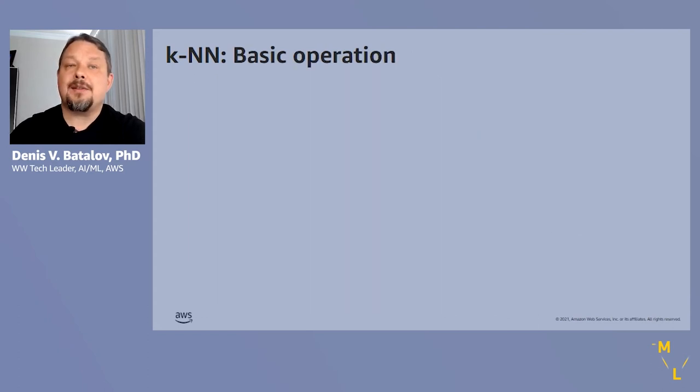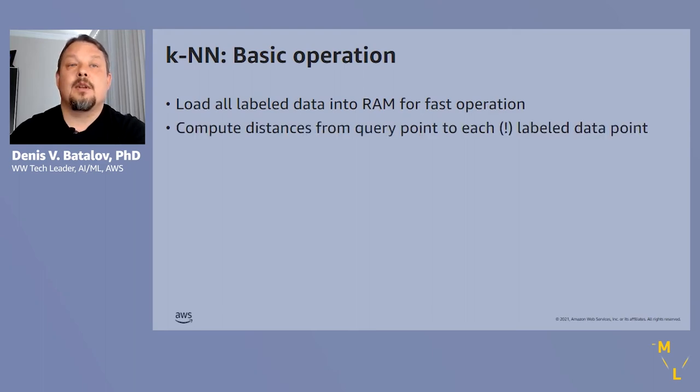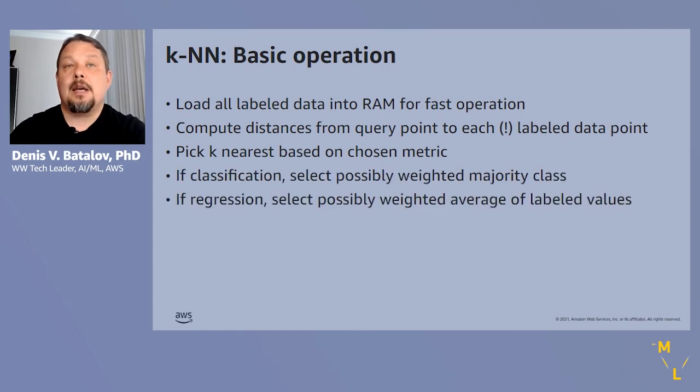Let's review the basic operation of KNN. First, all labeled data is loaded into random access memory. Note that there is really no training step in this basic operation. The model is really all the labeled data. Then, for a given query point, we must iterate through the entire data set and compute the distances. Based on that, we can pick the K nearest neighbors as our voting cohort. And finally, depending on classification or regression tasks, we either find the majority class or compute the average value of the nearest neighbors.